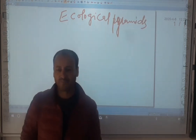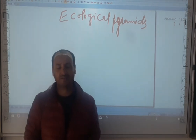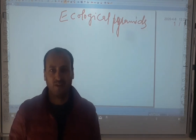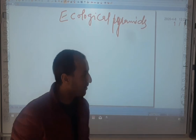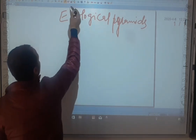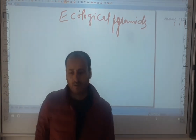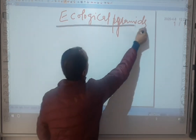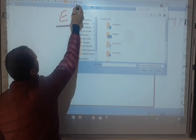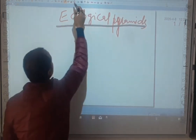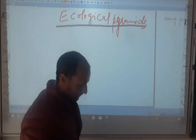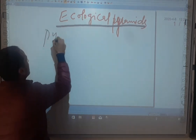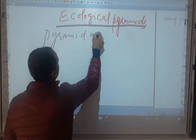In previous lectures, we discussed ecological pyramids — what they are, how they graphically represent the number of organisms, the amount of biomass, and the amount of energy at each trophic level. We discussed the pyramid of numbers in previous lectures. Today we will discuss the pyramid of biomass.